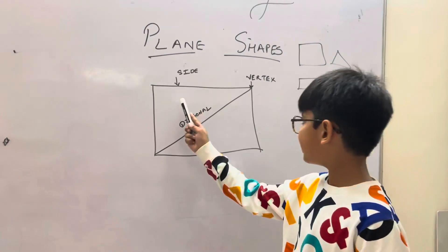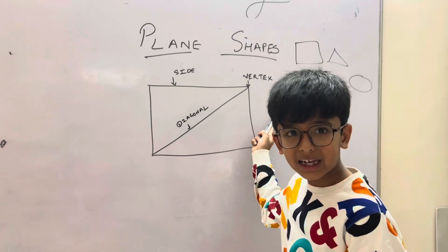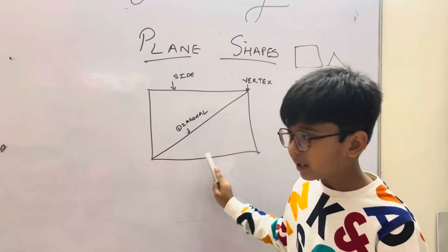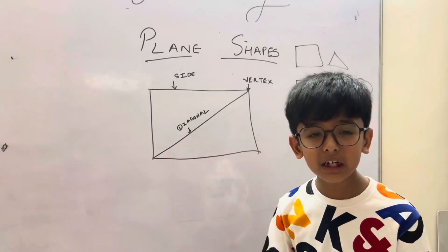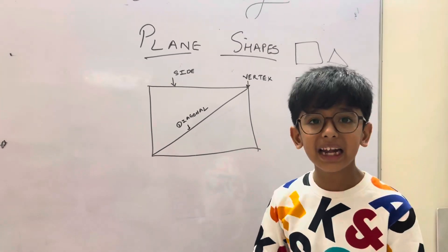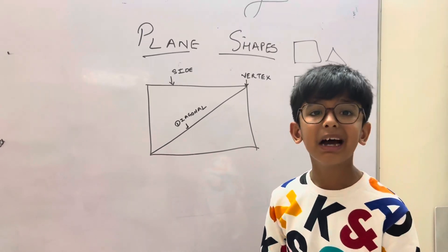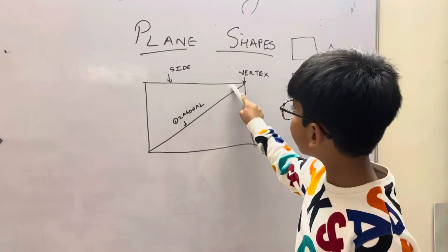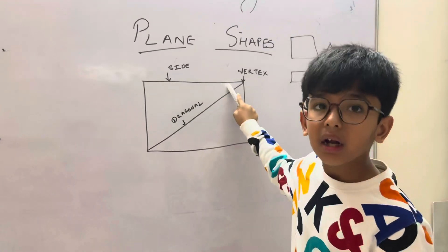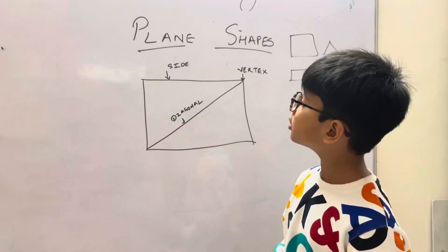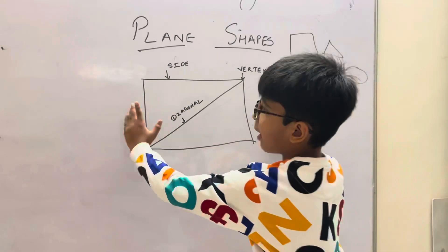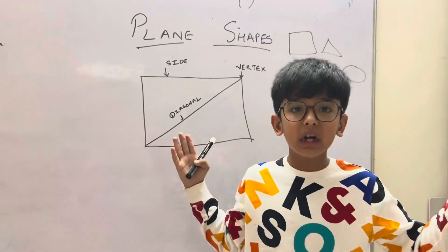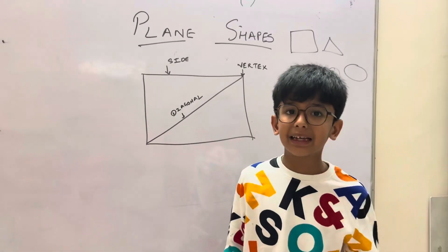What is a side? What is a vertex? And what is a diagonal? The definition of a side is: a side is a straight path that makes a part of a shape.